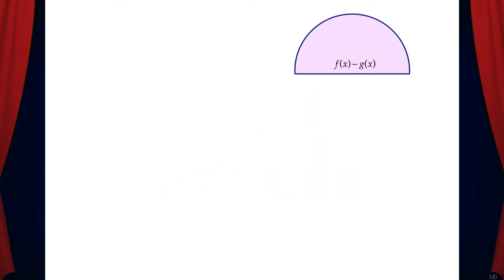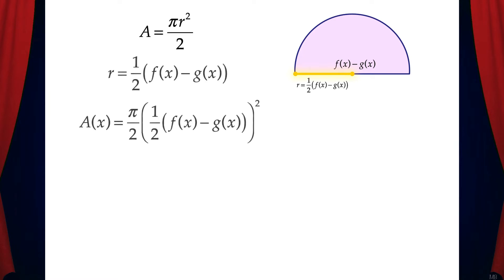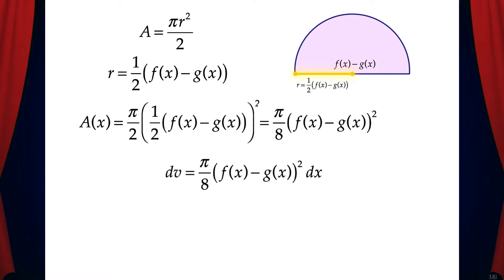The side of our semicircle is f of x minus g of x. That means the radius is one-half times f of x minus g of x. Now we know that the area of a semicircle is pi r squared over 2. So we can make the substitution for r into this equation, and that gives us the A of x equation. If we simplify this, we get pi over 8 times the quantity of f of x minus g of x squared. Now we can write dv, which is pi over 8 times the quantity of f of x minus g of x squared dx.